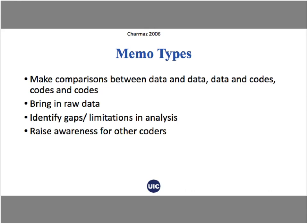As you memo, you can bring in other kinds of data to the analysis — comparing whether something you're seeing is new to this data or has been found elsewhere. You can also use memos to identify gaps or limitations in your analysis: quality of data problems, something missing, or maybe the interviewer was probing and pushing the interview too much in one direction. You might memo about that to flag concerns about data quality. When coding with other coders, which is important in some kinds of qualitative research, memos can raise awareness of issues for other coders.